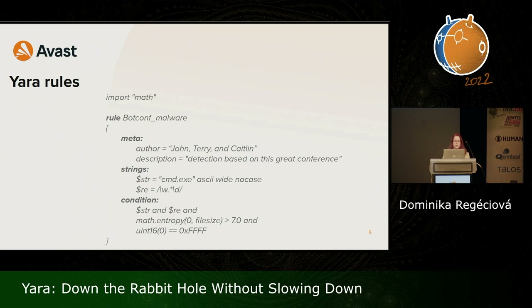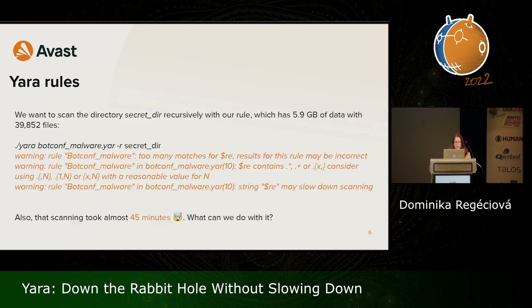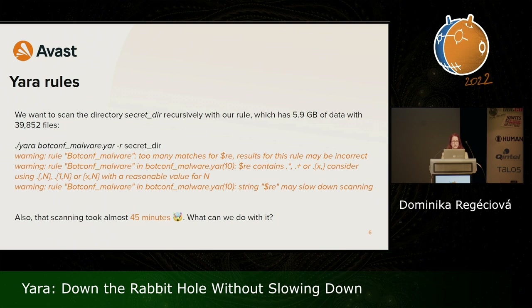If we use an example rule on some data — I selected a random directory in my system with around 6 gigabytes of data and around 40,000 files — we find out we have a little bit of a problem. Why? Firstly, YARA will generate three warnings.